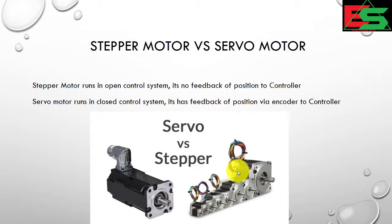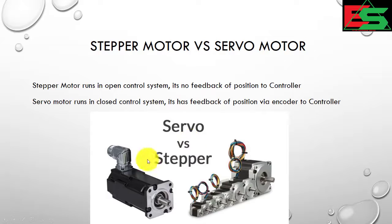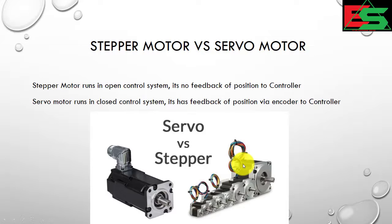What is the difference between a stepper motor and a servo motor? Both work for position control in applications. A stepper motor runs in an open loop control system - there is no feedback of position to the controller. But in the case of a servo motor, it runs in a closed loop control system with position feedback via encoder to the controller. This is the main difference: servo motor has encoder-based position feedback, stepper motor does not.